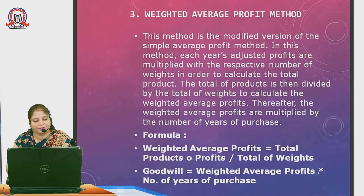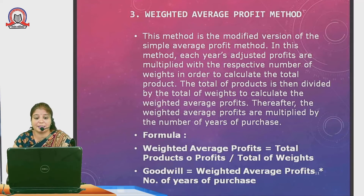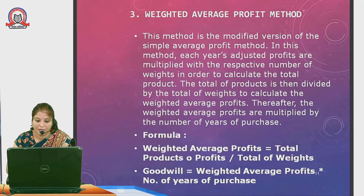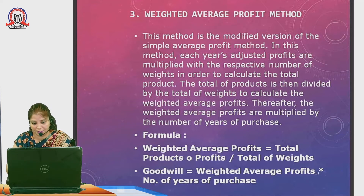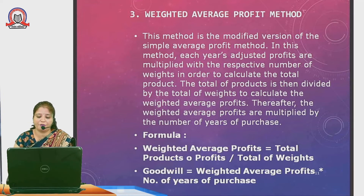The weighted average profit method is a modified version of the simple average profit method. Each year's adjusted profit is multiplied by its respective weight to calculate the total product. The total product is then divided by the total weight to get the weighted average profit. For example, if weights are 1, 2, 3, 4 — total weight is 10. Goodwill = Weighted Average Profit × Number of Years Purchase.